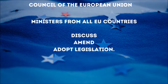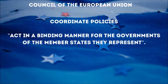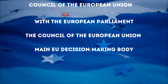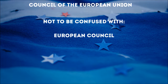The Council brings together ministers from all EU countries to discuss, amend and adopt legislation. They also coordinate their policies. All ministers present at the Council are empowered to act in a binding manner for the governments of the member states they represent. Together with the European Parliament, the Council of the European Union is the main EU decision-making body. Not to be confused with the European Council, which meets four times a year where EU leaders meet to set the overall direction of EU policy, or the Council of Europe — that's no EU body.